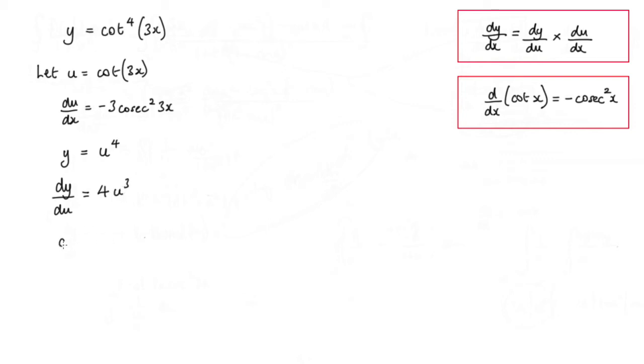Now we want dy by dx. The dy by dx using the chain rule is dy by du times du by dx. And dy by du, that's 4u cubed. And then we're going to multiply that by du by dx, and du by dx is negative 3 cosec squared 3x.